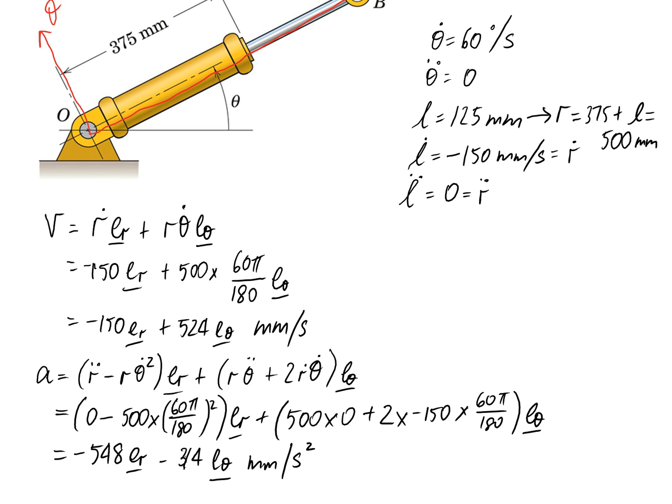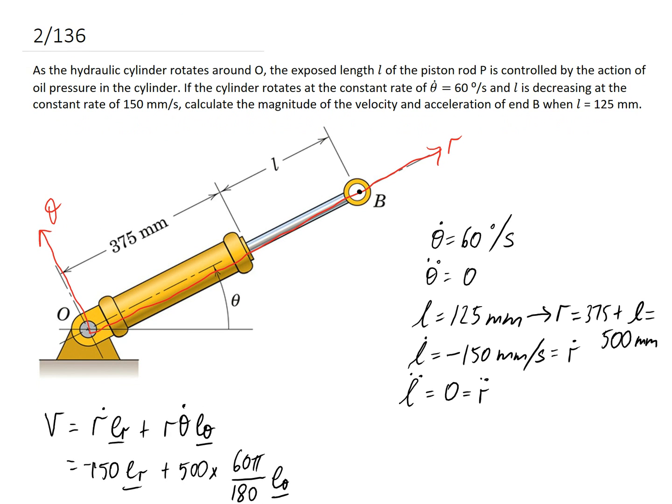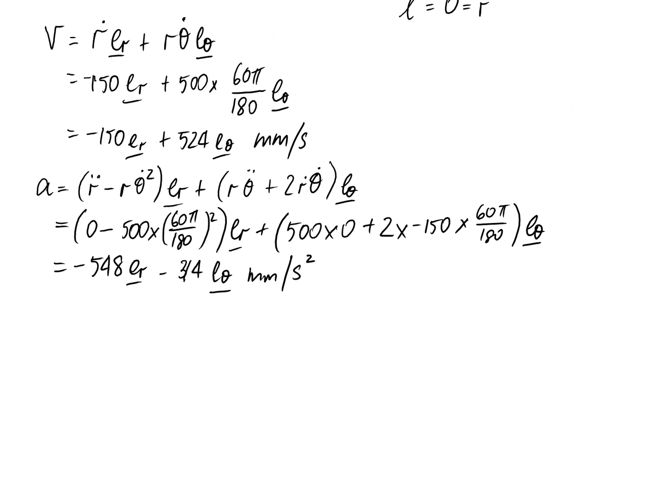So the final part of the question, if I just scroll back up, asks us to calculate the magnitude of the velocity and acceleration. And at the moment, all we've got is the vector forms. So we just need to convert it. So for the velocity, if we want to find the magnitude, just need to take both of our components, square them and then take the overall square root. And this comes out to be 544 millimeters per second.